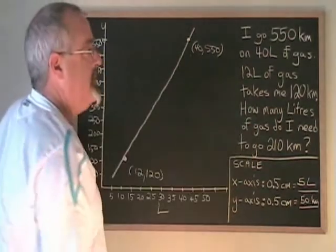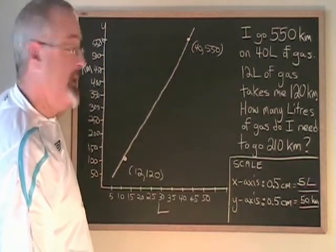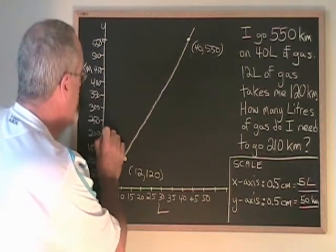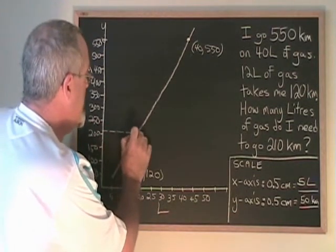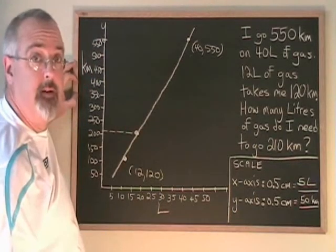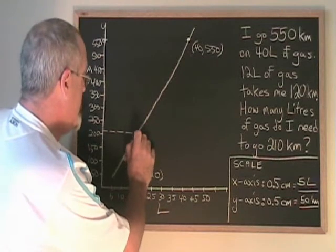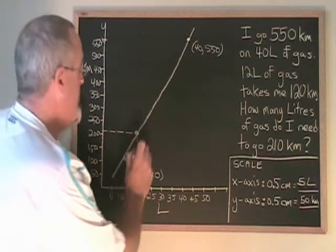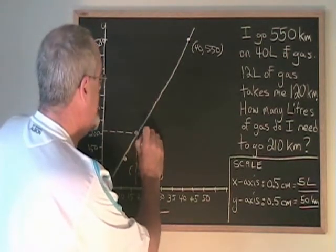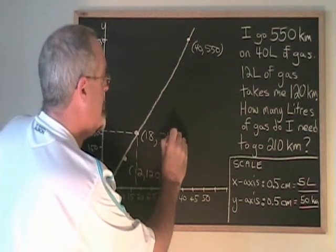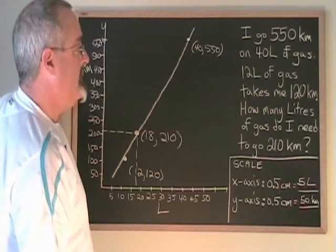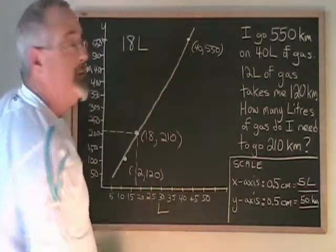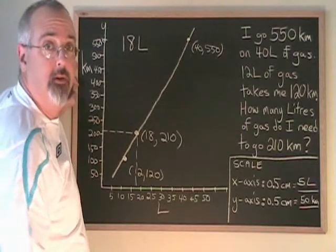Finally, I can answer the question. How many liters of gas do I need to go 210 kilometers? I find 210 kilometers on this axis, and I draw a dotted line straight across until I hit the line that I graphed. From that dot, I go straight down to the other axis. And I have about 18. So I'm writing the point here. 18, 210. And my final answer is that for 210 kilometers, I should need 18 liters of gas. Make sure to include the unit of measure when you give your answer.